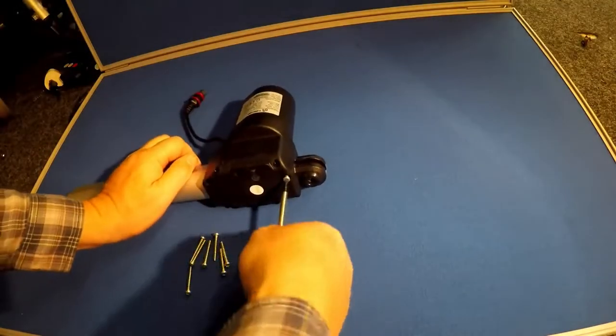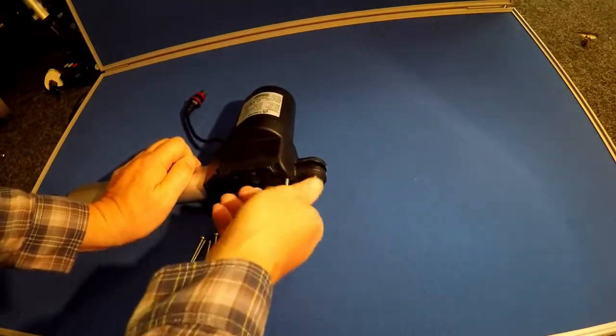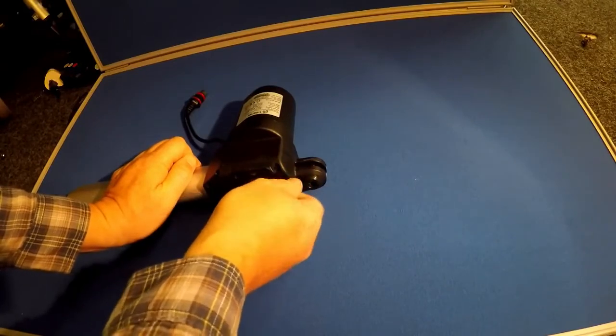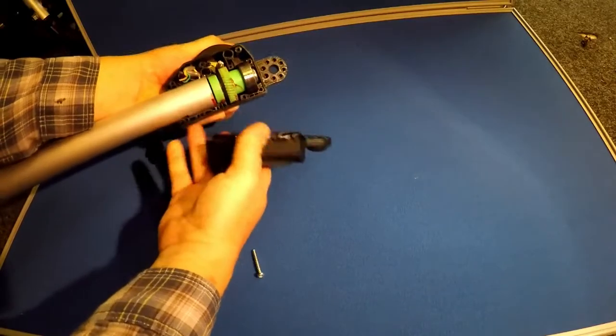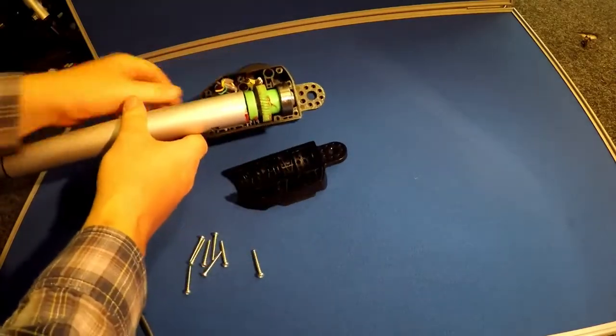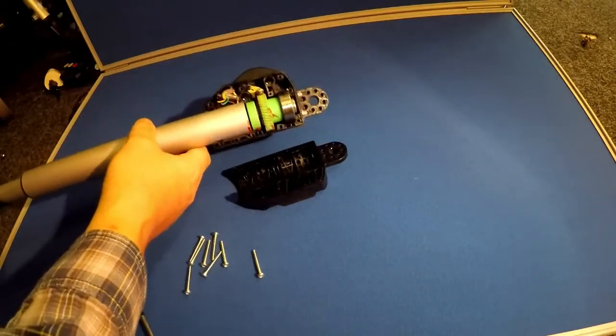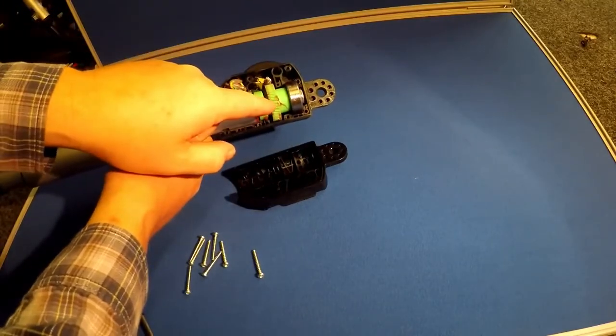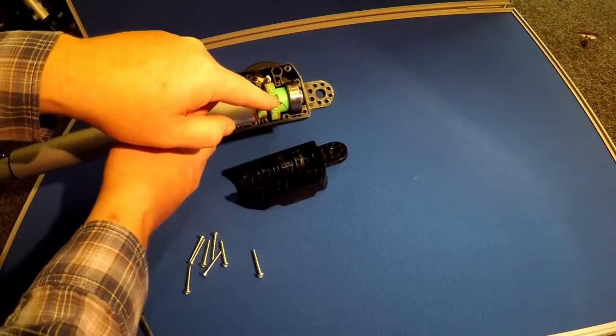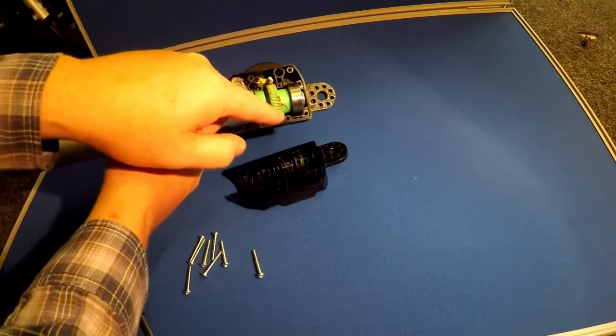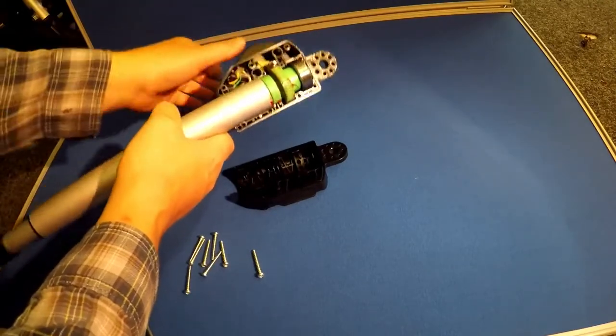Here's the last screw coming out, there's eight in total. Now we can see what's happening inside. That's your motor end, that's your drive gear from the motor onto the nylon gear, pulling it backwards and forwards.